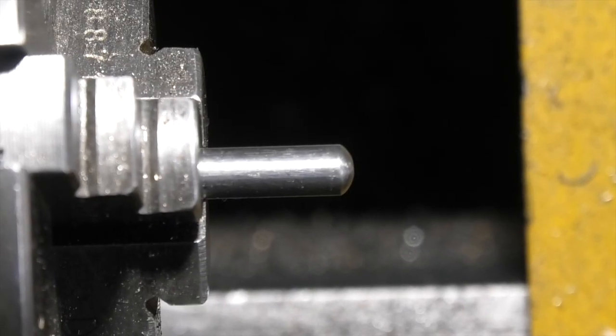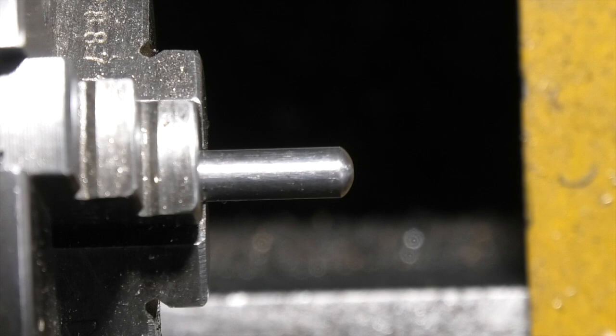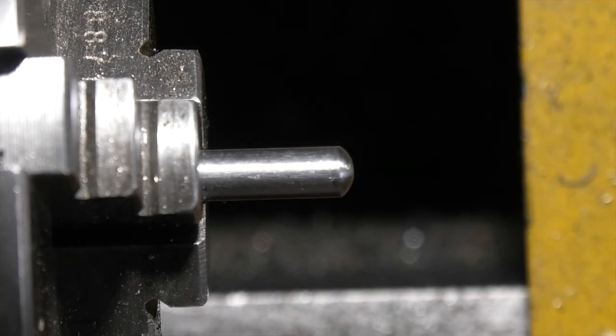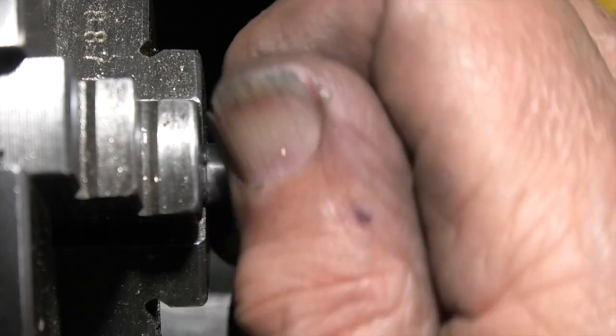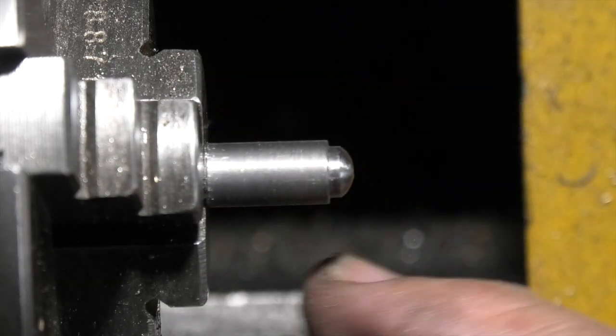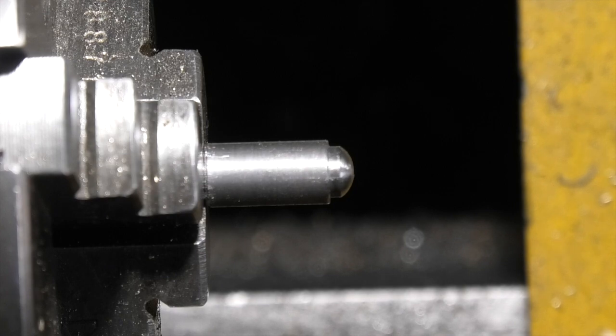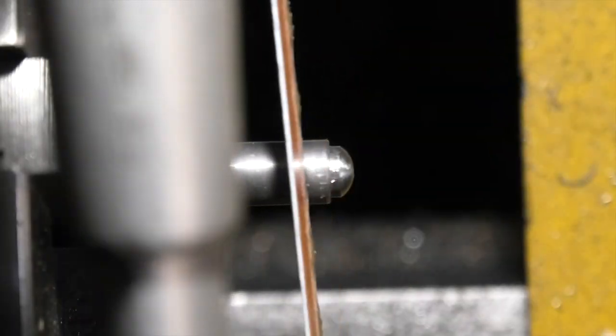I'm just making the pins that hold the knurling wheels. I'm putting the dome on the end, then I'll put a bush on there just to give me a shoulder. Then with my slitting saw, otherwise known as a hack saw, rest it up against the bush. Then you can saw the slot.